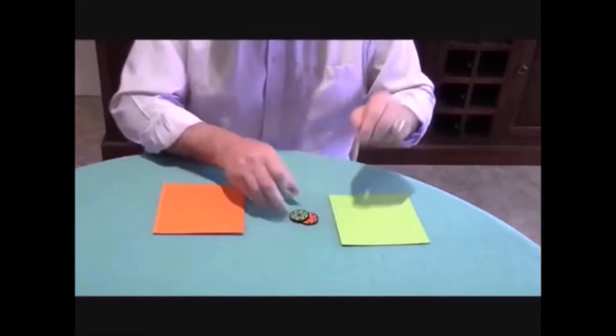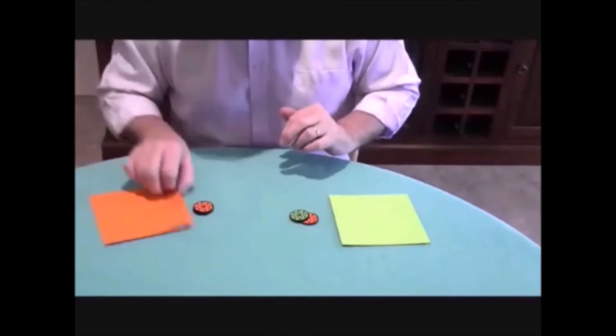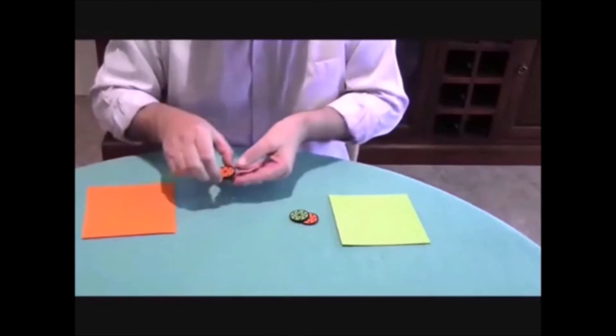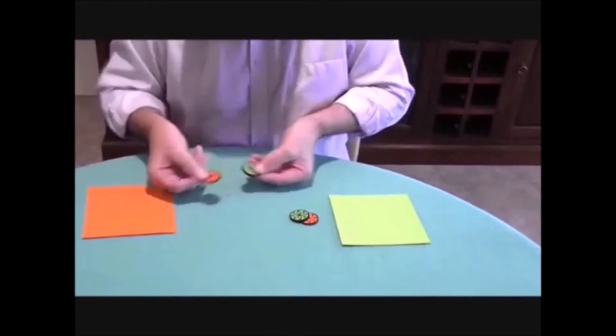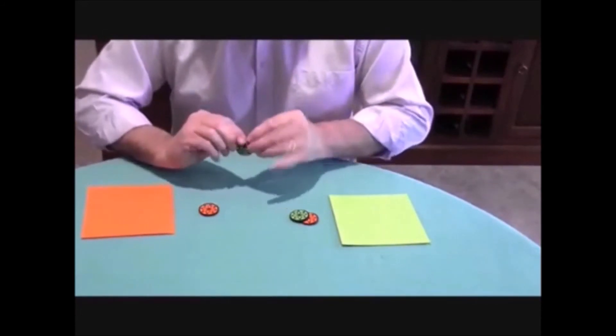So there's no prizes for guessing what might be under the orange sheet. Let's have a look. We've got the orange sheet. We've got one orange on the top. One orange chip that is. And the other one is now a green chip.